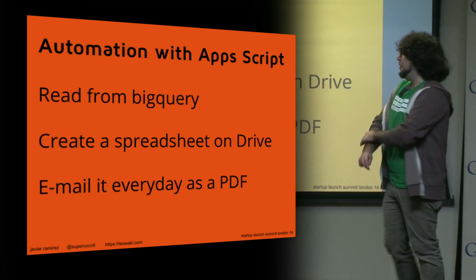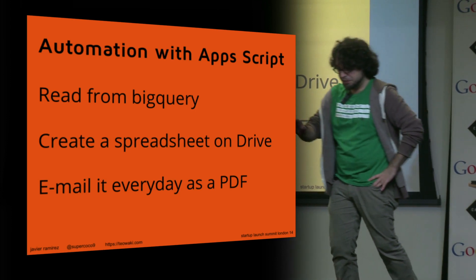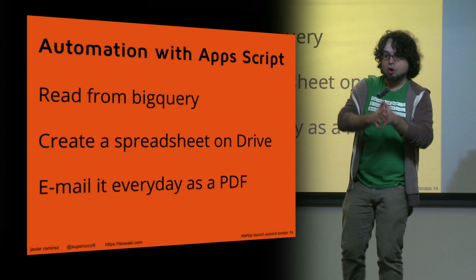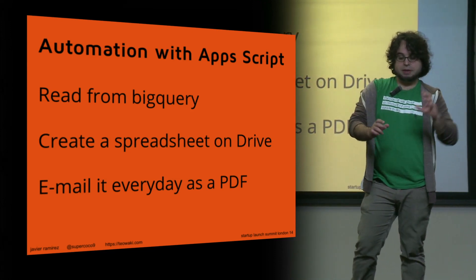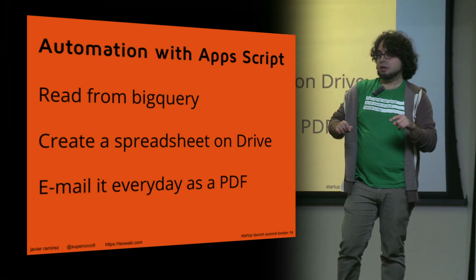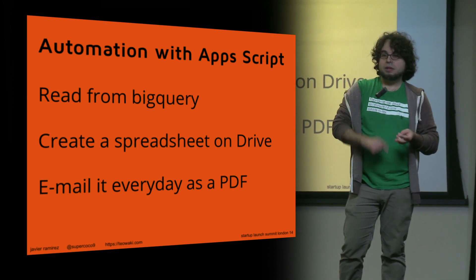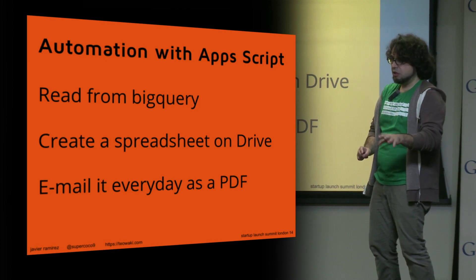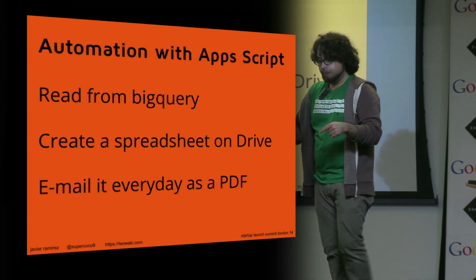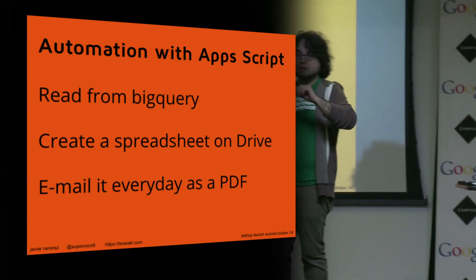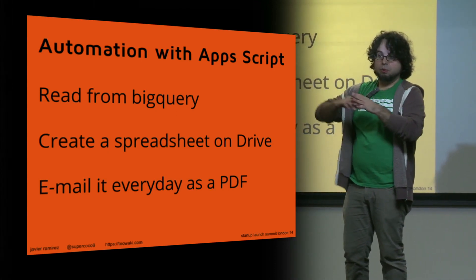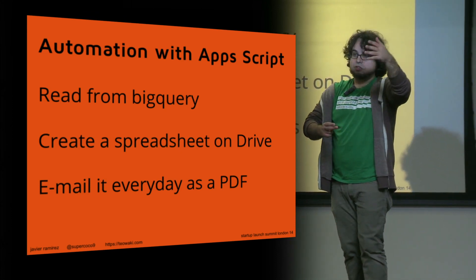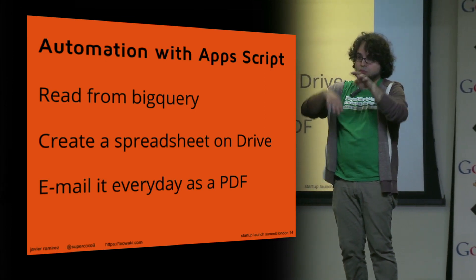You can export from BigQuery to CSV, which is close enough. But there's something called Apps Script, also from Google and totally free. Apps Script is like JavaScript — a smaller subset of it — and it lets you interact with most Google APIs: Google Drive, BigQuery, Google Analytics, Gmail. What we've done is write a script that reads data from BigQuery, creates a spreadsheet on our Google Drive, and sends an email. Every morning at 9:30 I get an email with my KPI indicators and a link to the spreadsheet.